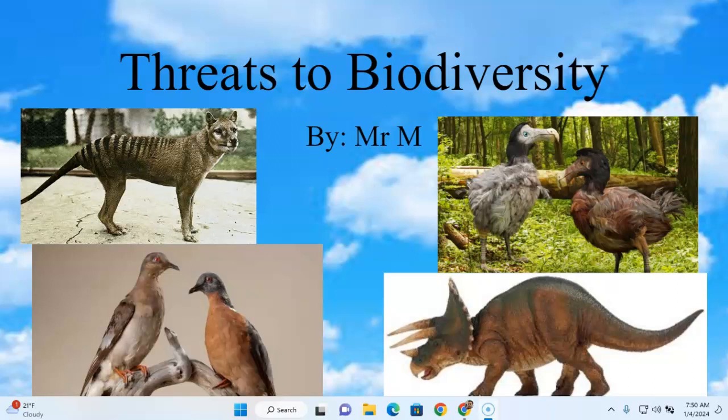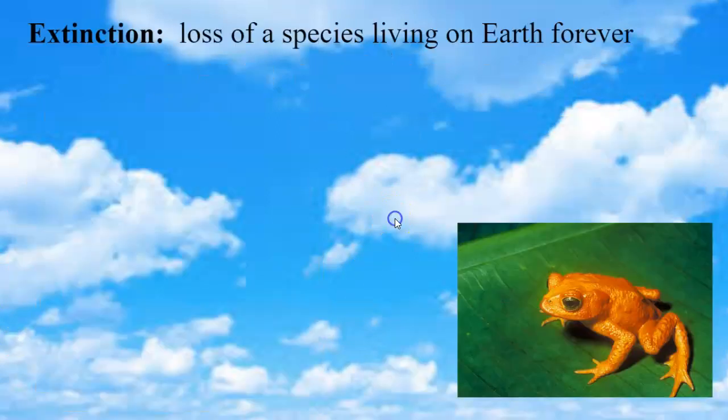If you look at the pictures on this page, these animals all have something in common. The Tasmanian tiger, the dodo bird, triceratops, and the passenger pigeon are all extinct animals. Extinction means the loss of a species living on Earth — forever.